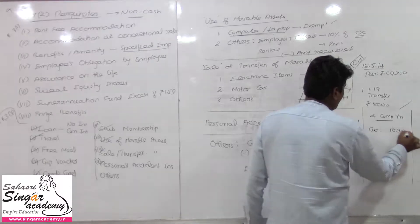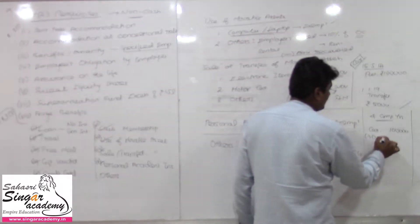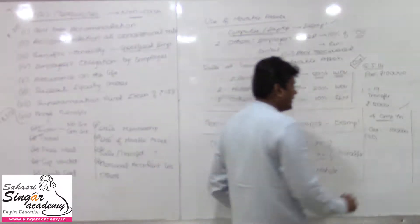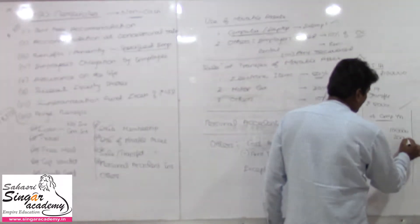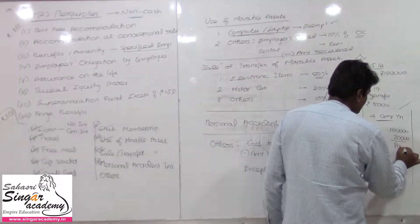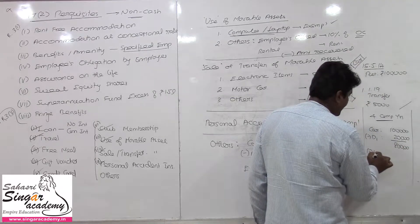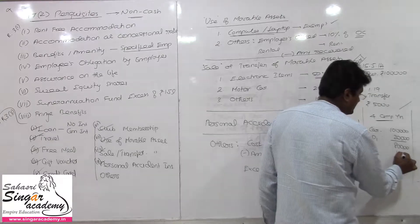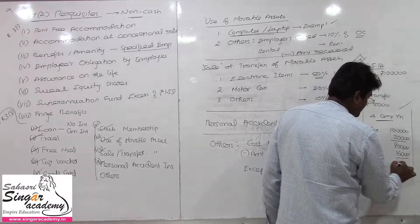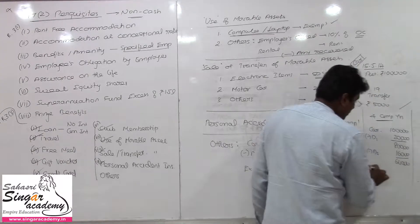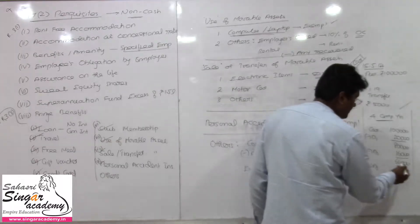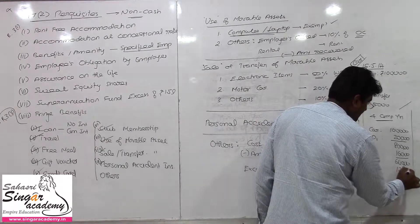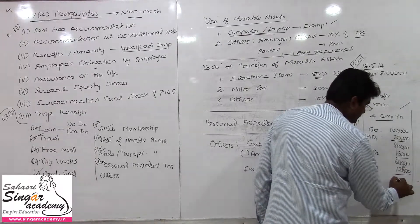₹1 lakh minus depreciation for the first year at 20% = ₹20,000, leaving ₹80,000. Depreciation for second year: 20% of ₹80,000 = ₹16,000, leaving ₹64,000. Depreciation for third year: 20% of ₹64,000 = ₹12,800, leaving ₹51,200.